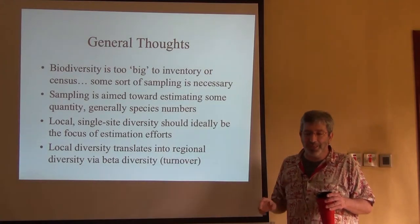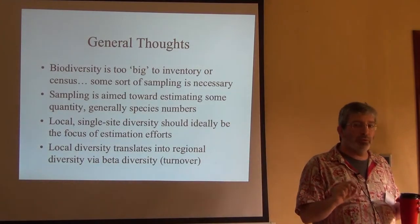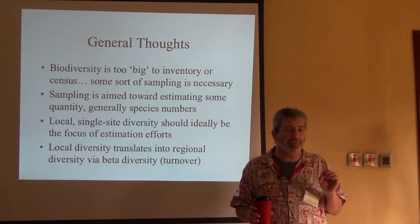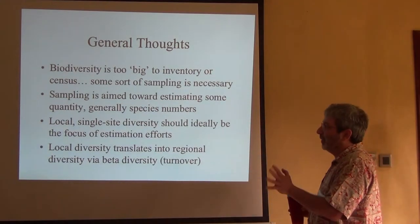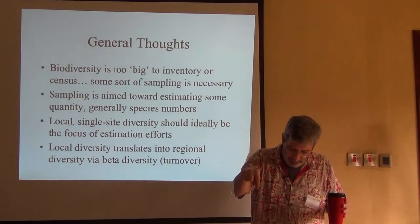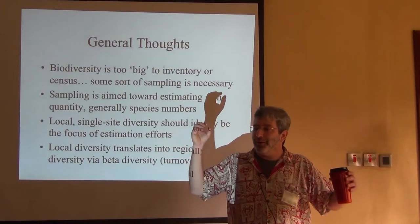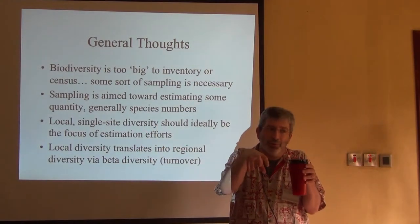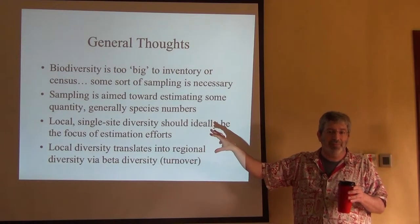In sampling, we're talking about estimating a quantity, and that quantity should be local single-site diversity. Ideally we want a picture of the diversity at individual sites. When we start aggregating - a tenth of a degree, a half a degree, a degree, two degrees - that's aggregating, and you start contaminating local-site diversity with among-site diversity. That's what we would love to have, and it's very rare that we can have it.